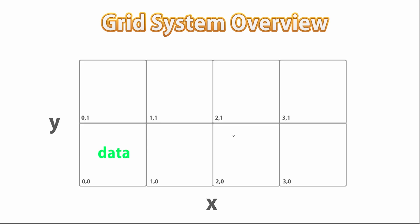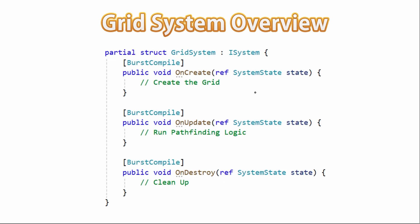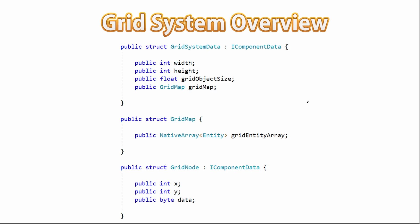Normally I use C# objects to build my grid, but here on this DOTS course we want to learn how to make it work in a data-oriented manner. This requires us to be a bit clever with how we set things up, but it's actually not that difficult. First we're going to create the grid system — an actual ISystem. We'll use onCreate to create the grid, onDestroy for cleanup, and onUpdate to run all kinds of pathfinding logic. For storing the data for the grid, we're going to use mainly three data structures. We're going to first define a GridSystemData, which contains the general data for our grid: the width, the height, and the size of each grid object.